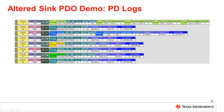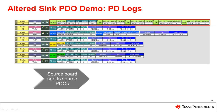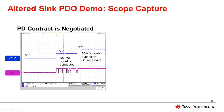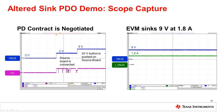The PD log shows the source board PDOs offering up to 20 volts. The sink, which is the EVM in this case, requests 9 volts at 1.8 amps. The source accepts and the agreed upon PD contract is now 9 volts at 1.8 amps. The scope shows this transition from 5 volts to 9 volts when the 20 volt button is pressed on the source board, and the EVM begins sinking 9 volts at 1.8 amps.